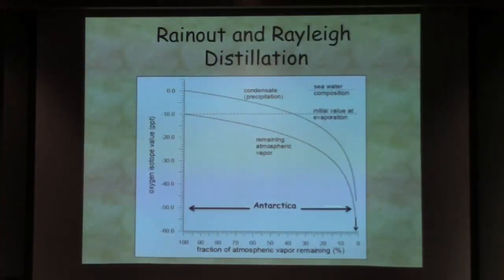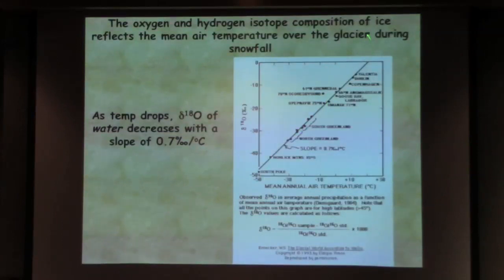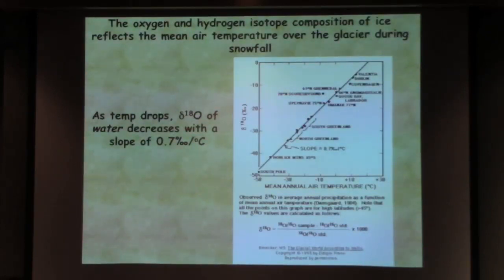Antarctica shows values around minus 50 per mil. What's interesting is that the δ¹⁸O and the δD of the ice that accumulates in various places — Greenland, Antarctica, mountain glaciers — shows a beautiful relationship to mean annual air temperature. So the geochemistry of the ice gives us an environmental signal that we can effectively link to what's happening over these continental ice sheets and mountain glaciers.